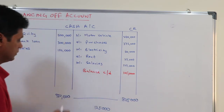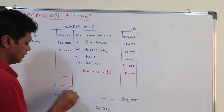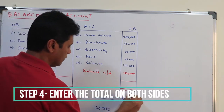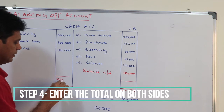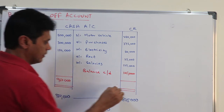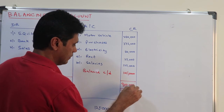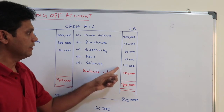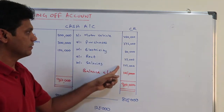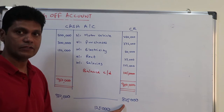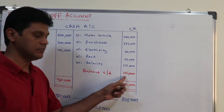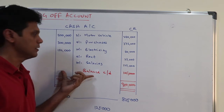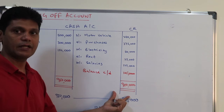Now take the totals on both sides. The debit side is 950 and the credit side is also 950. The credit side transaction total is eight hundred and twenty five thousand and the balance is 125 thousand, so when you take both sides the total will be 950 on each side.